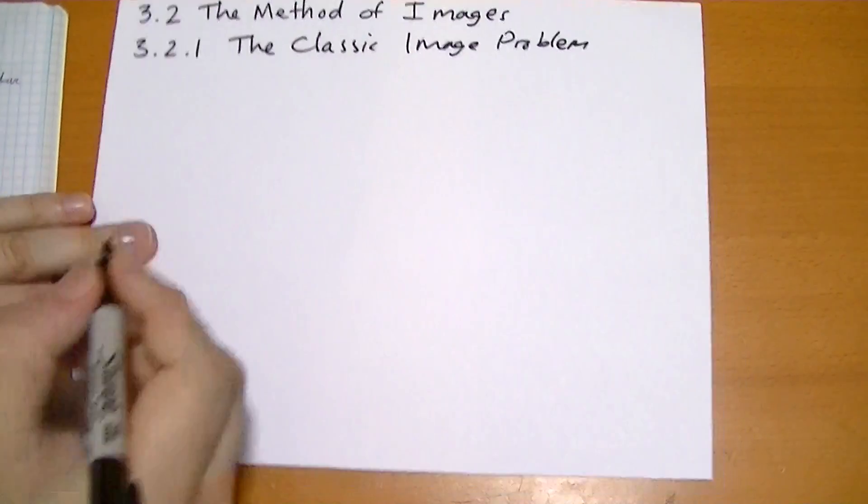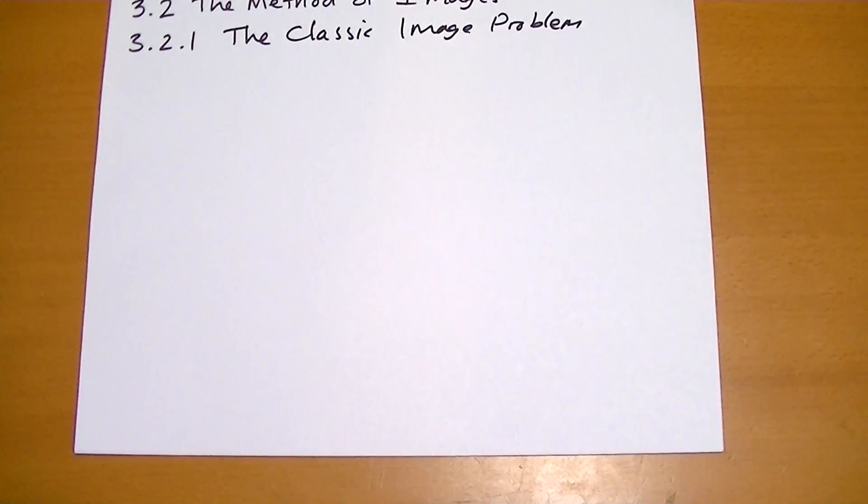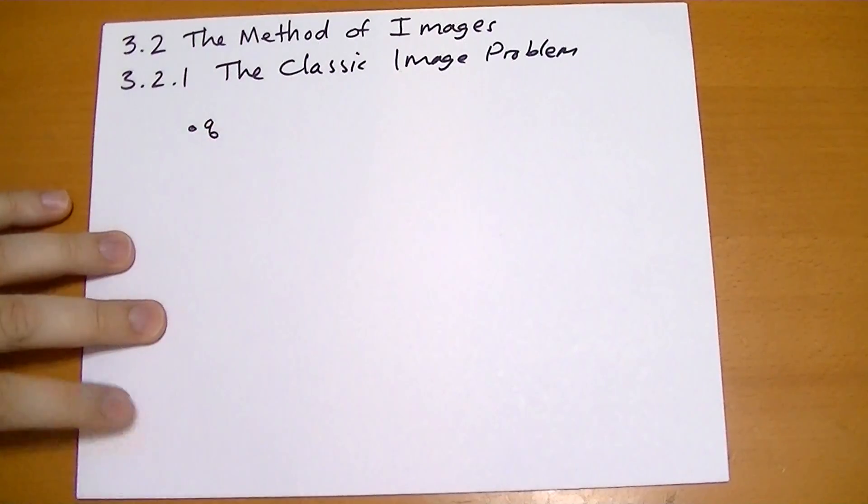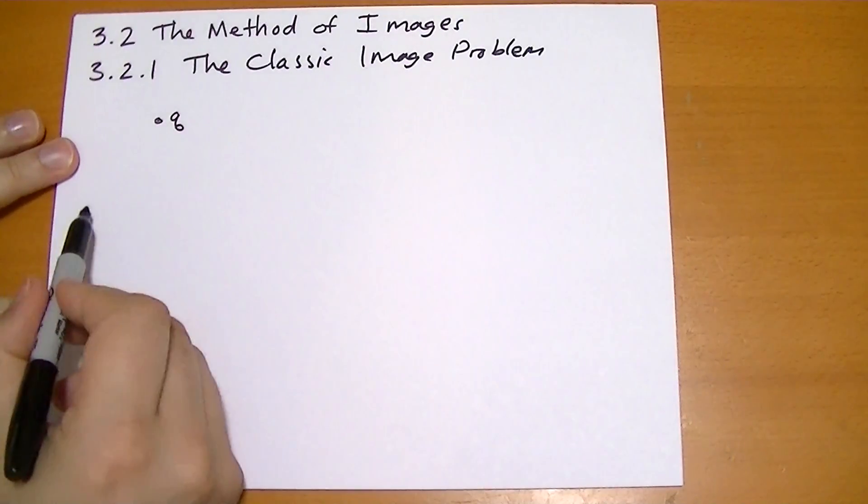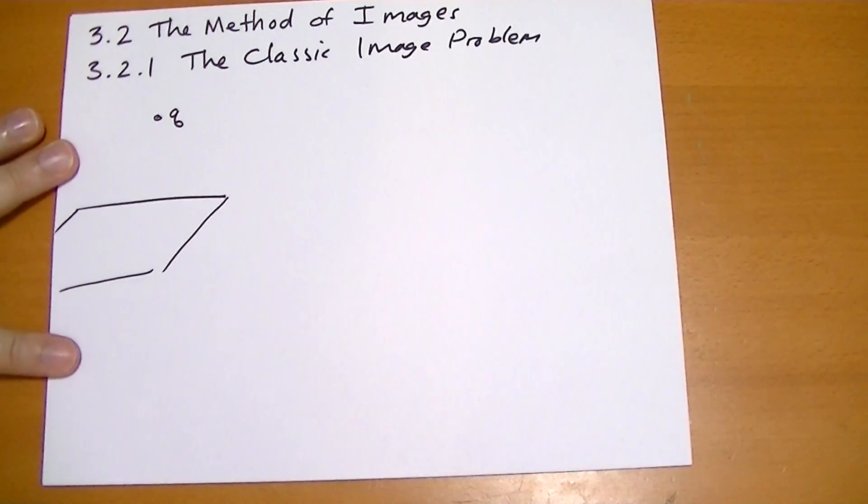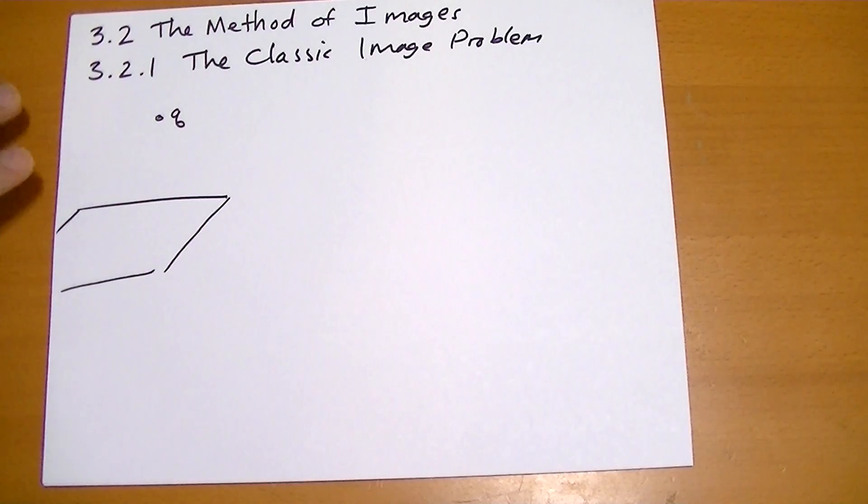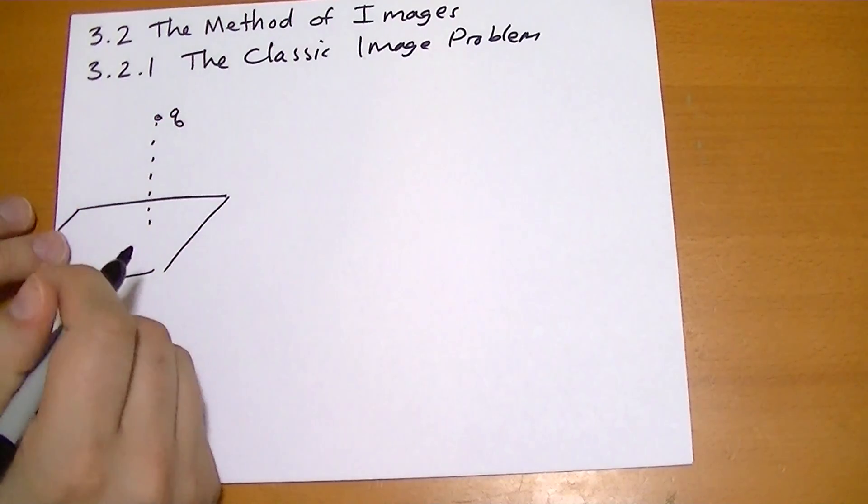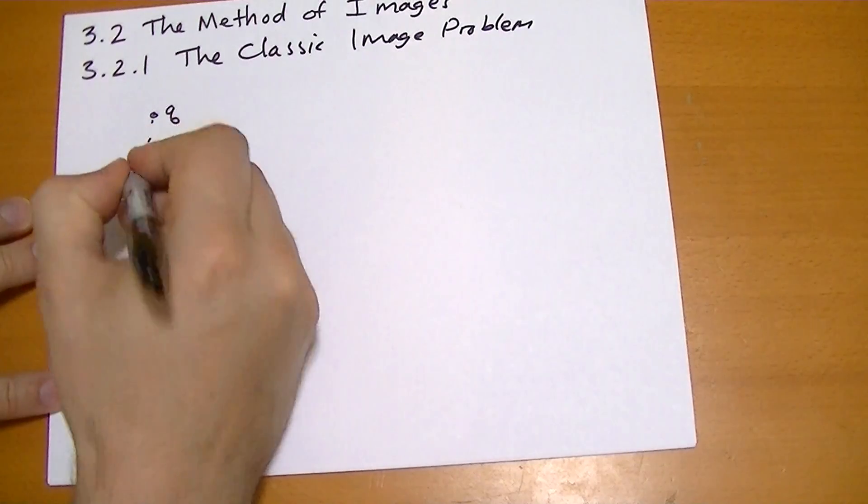This is the classic image problem, so I'm going to try to draw this one big. I don't want to draw it too small. So we have some charge Q sitting above an infinite plane, which I'm going to represent with a rectangle, which does not do it any justice. Infinite planes extends everywhere. And so it's sitting a certain distance D above that plane.